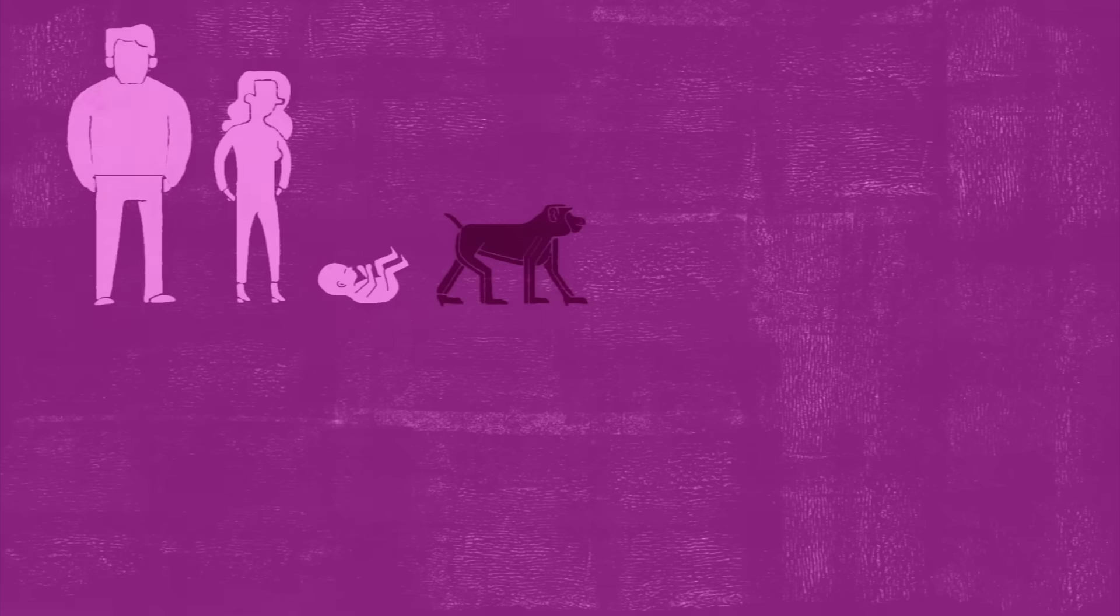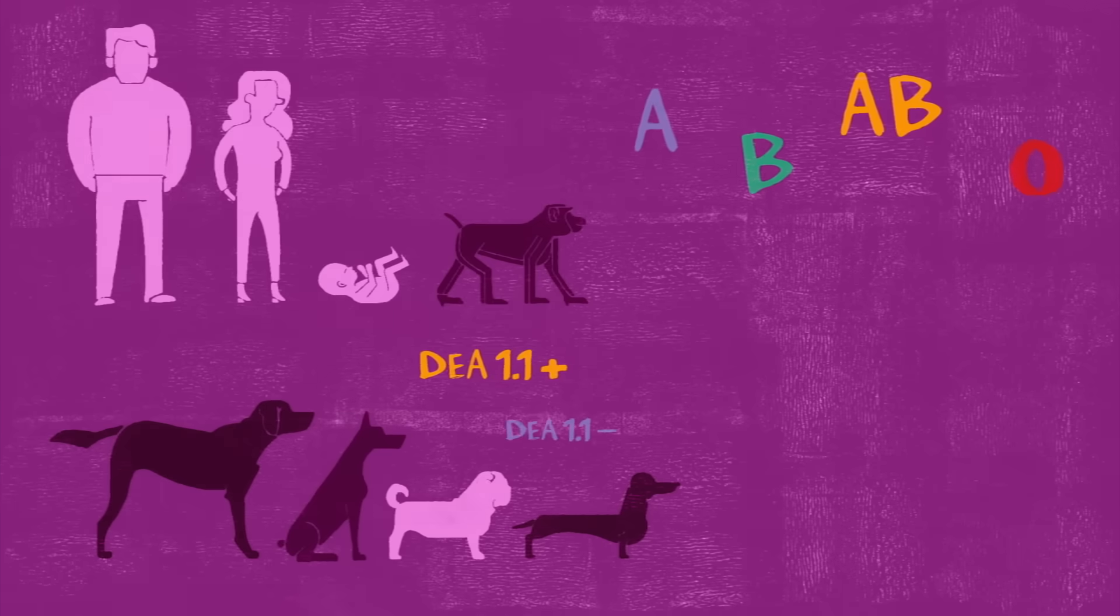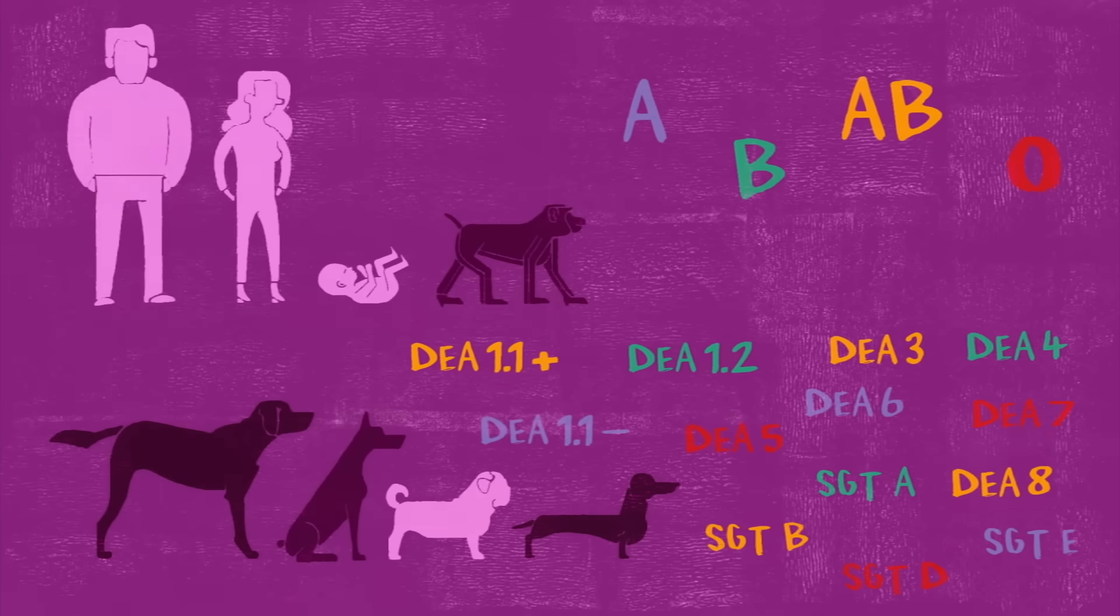Finally, different species have different sets of antigens. In fact, the four main blood types shared by us apes seem paltry in comparison to the 13 types found in dogs.